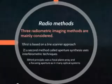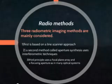Today, in principle, three radiometric imaging methods are considered. The first, more classical one, is based on a line scanner approach and is relatively easy to implement. It has strong limitations concerning real-time imaging, the spatial resolution, and the field of view.